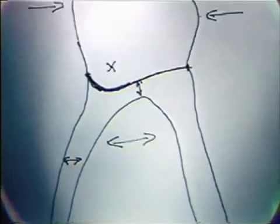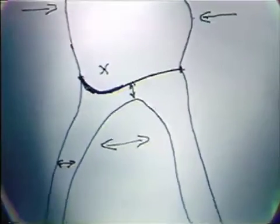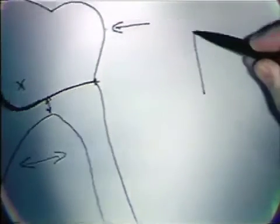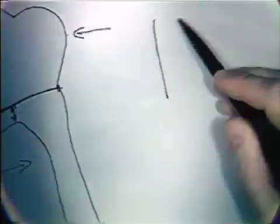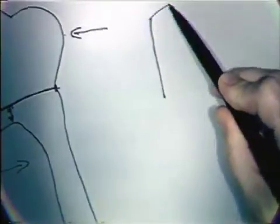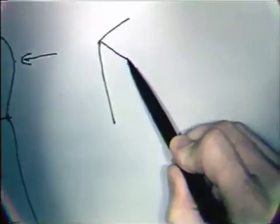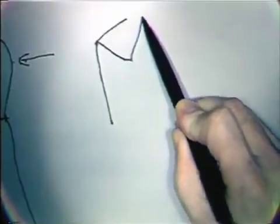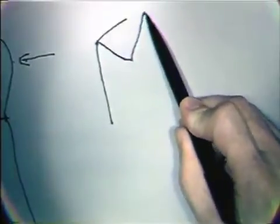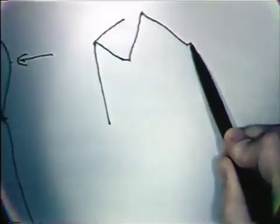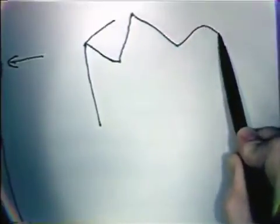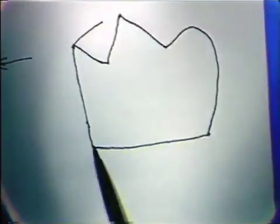If we look at this tooth from the lingual, we'll find a different type of anatomy because we pick up this real sharp lingual cusp — the mesial lingual cusp — which has a very unusual shape to it. Our cervical line is relatively indistinct here.